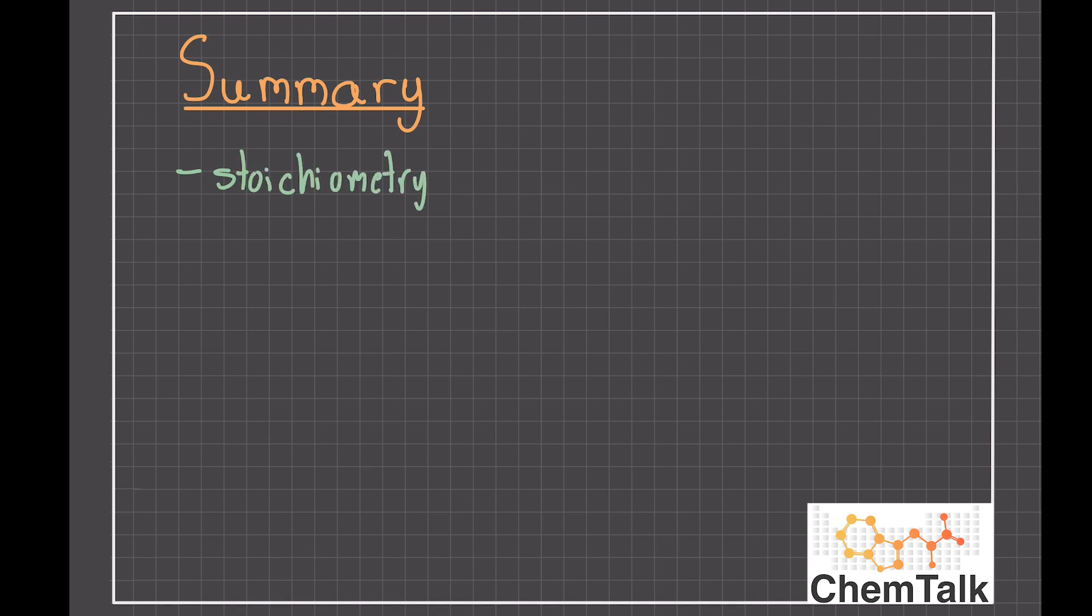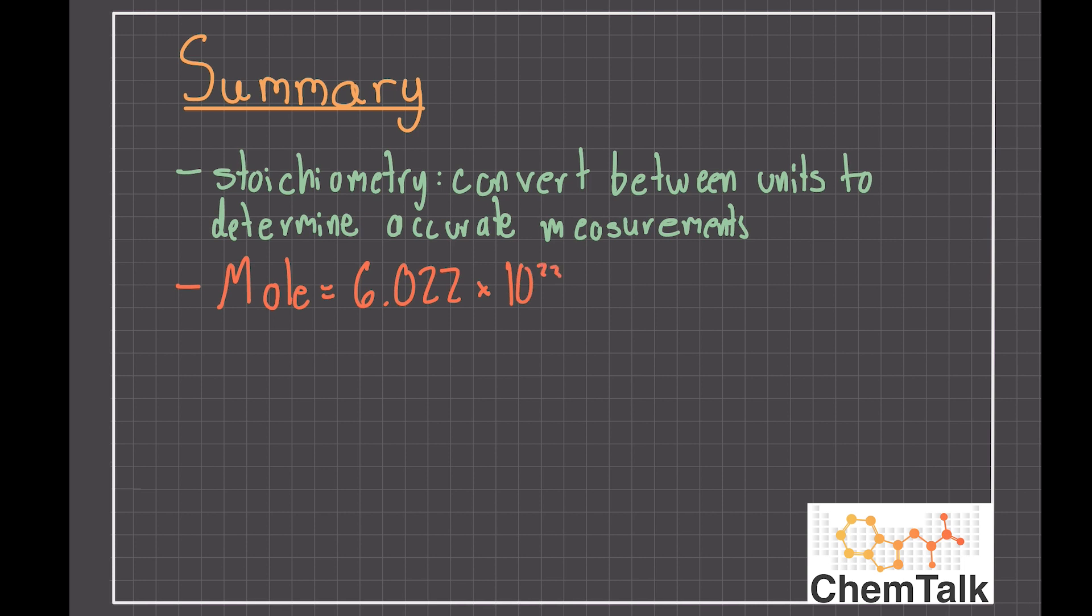In this video, we learned that stoichiometry allows chemists to convert between units and determine accurate measurements. We also learned that a mole is 6.022 times 10 to the 23rd particles, and it allows us to do fluid conversions between units and measurements, such as atoms, molecules, ions, or grams. Additionally, we learned that the molar mass is available on the periodic table, and it is grams per mole, and it allows us to convert between grams and moles fluidly for every element.